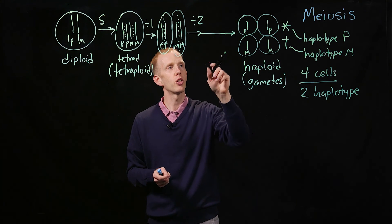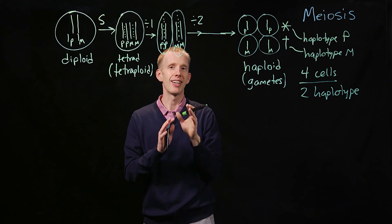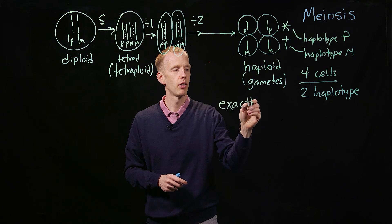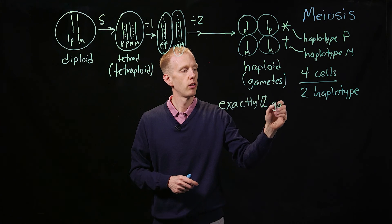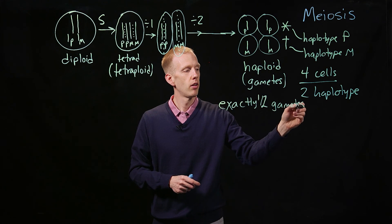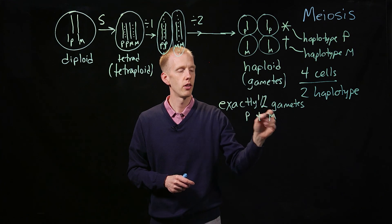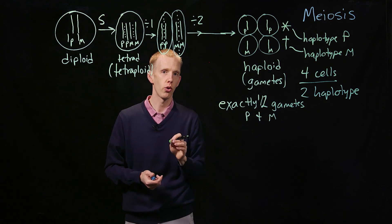There's never going to be a situation where there's paternal, paternal, paternal, and one maternal. It's always going to be exactly half of the gametes that carry the paternal allele, and the other half of the gametes will carry the maternal allele of each chromosome.